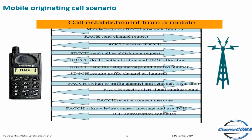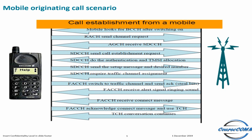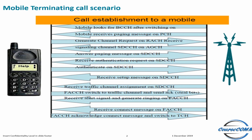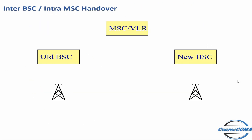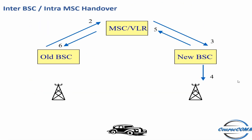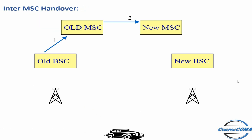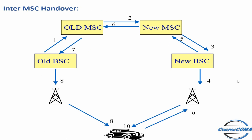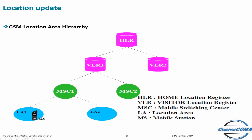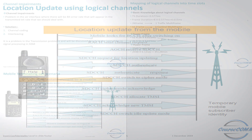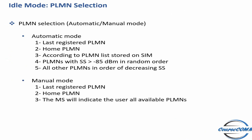We then reach the traffic and signaling scenarios part. In chapter 11, we talk about the call originating and terminating scenario. In chapter 12, the handover scenario. Then in chapter 13, location update scenarios and their types. In chapter 14, the process of cell selection and re-selection.